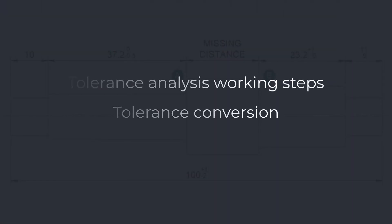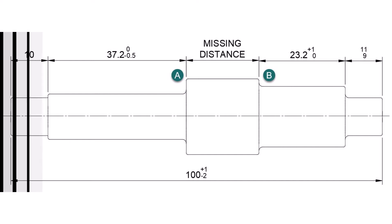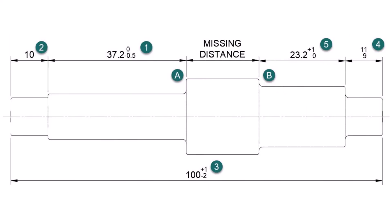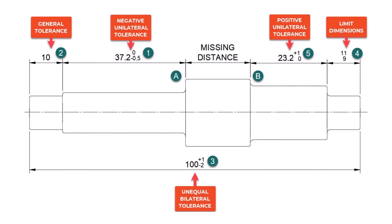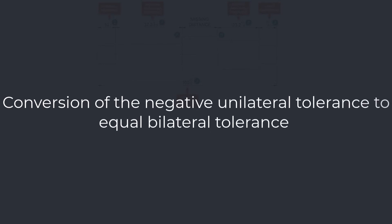Tolerance Conversion. Before we start converting different tolerances into equal bilateral tolerancing, for more straightforward navigation through the dimensions, we will assign a number to each one of them. We can see that we have a few different types of tolerances defined on the drawing. As previously stated, in order to perform the stack-up analysis, we need to convert all tolerances to equal bilateral tolerances.